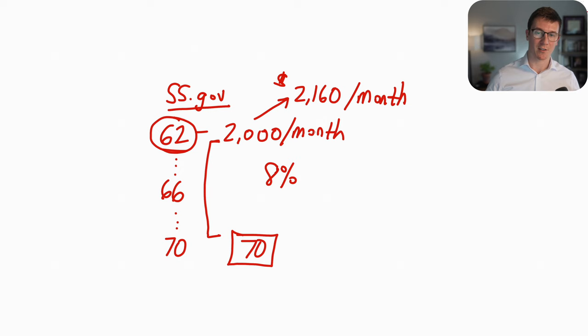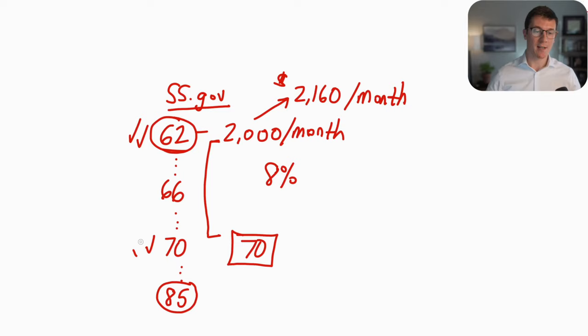However, if you're going to live until say 85, now it makes sense to wait until you're age 70 to collect because the higher amount of money you're going to get here will eventually overcome all of the missed months that you would have been collecting until 70.